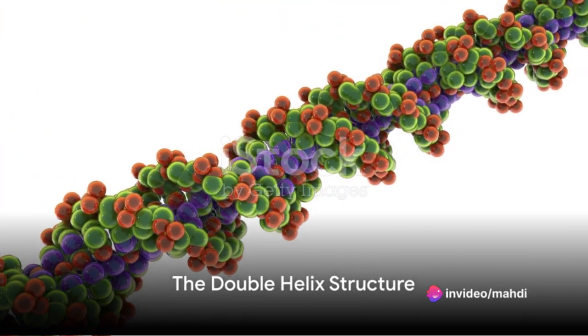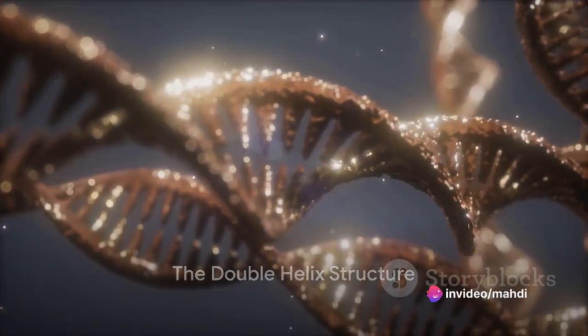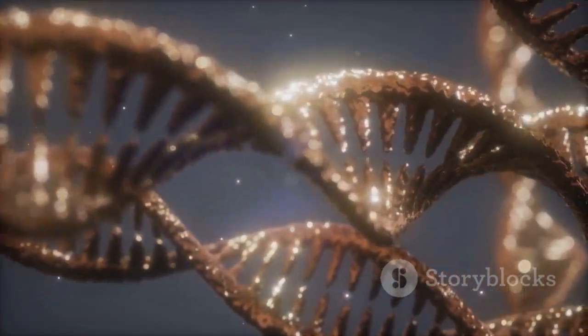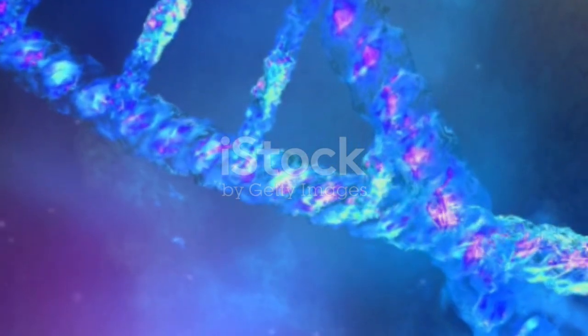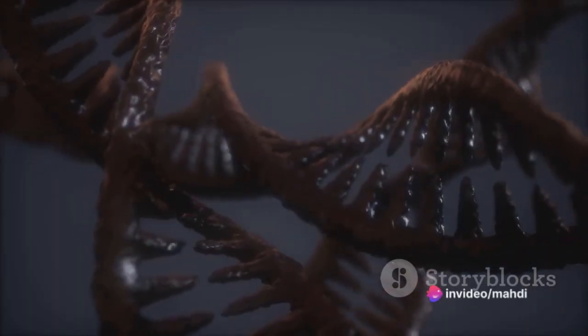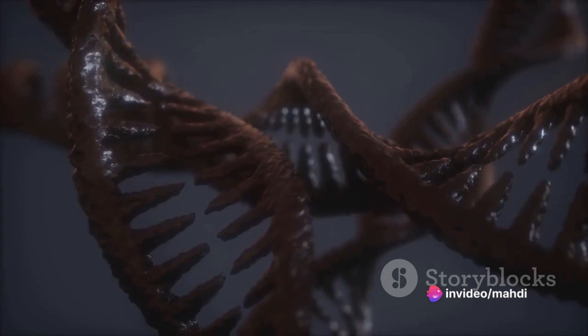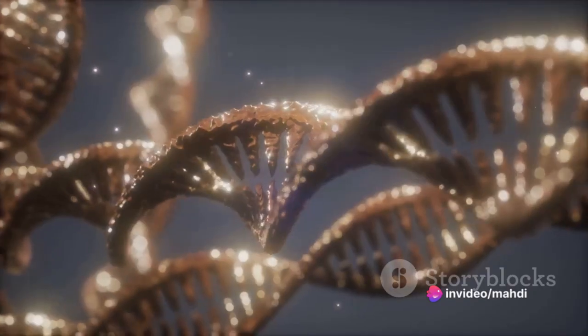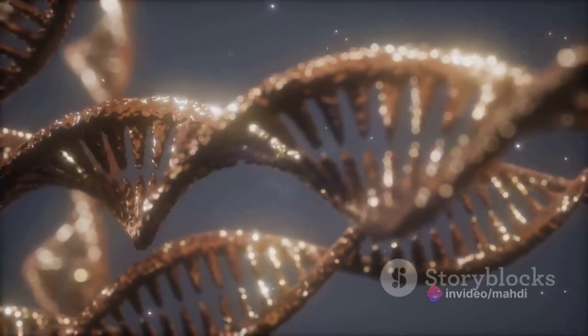Imagine a twisted ladder or a spiral staircase, that's the structure of DNA known as a double helix. Look closely and you'll find that this ladder is made up of smaller units called nucleotides. A DNA nucleotide is a monomer, a single unit that can be linked to form longer chains. It's like a building block in the grand structure of DNA.